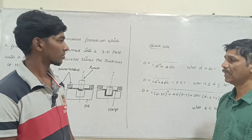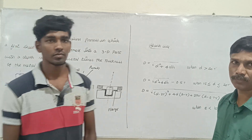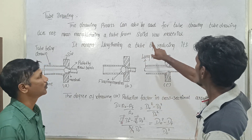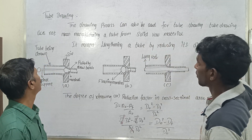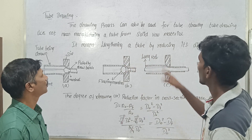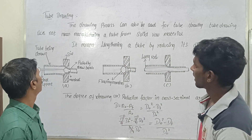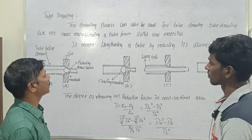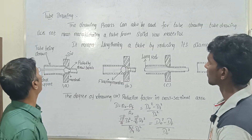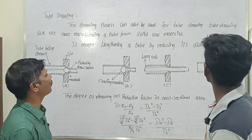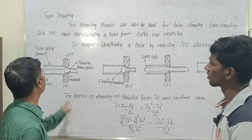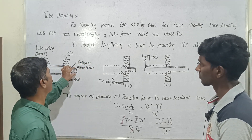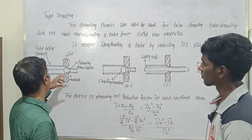This is the drawing process. The drawing process can also be used for tube drawing. Tube drawing does not mean manufacturing a tube from solid raw material — it means lengthening a tube by reducing its diameter.